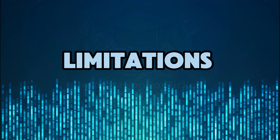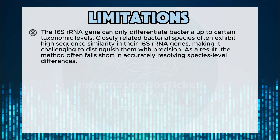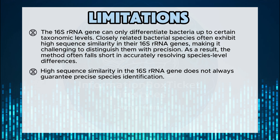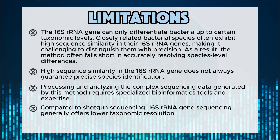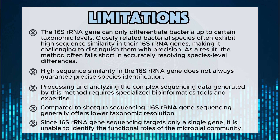Limitations of 16S rRNA gene sequencing: The 16S rRNA gene can only differentiate bacteria up to certain taxonomic levels. Closely related bacterial species often exhibit high sequence similarity in their 16S rRNA genes, making it challenging to distinguish them with precision, and the method often falls short in accurately resolving species-level differences. Processing and analyzing complex sequencing data requires specialized bioinformatics tools and expertise. Compared to shotgun sequencing, 16S rRNA gene sequencing generally offers lower taxonomic resolution. Since it targets only a single gene, it is unable to identify the functional roles of the microbial community.